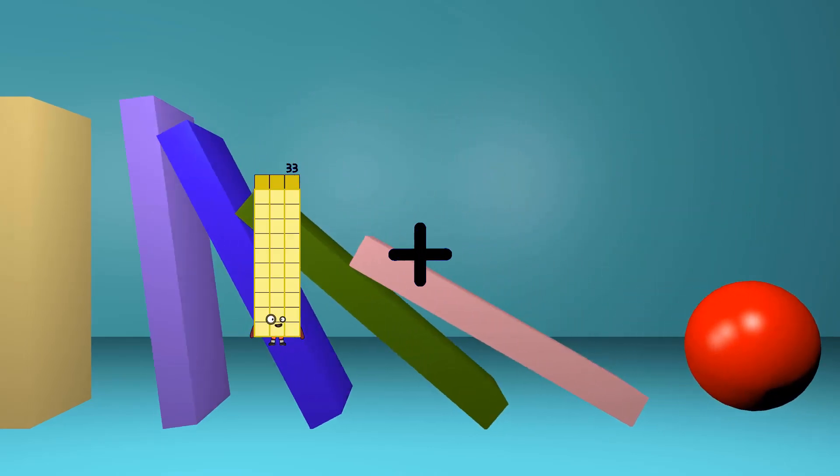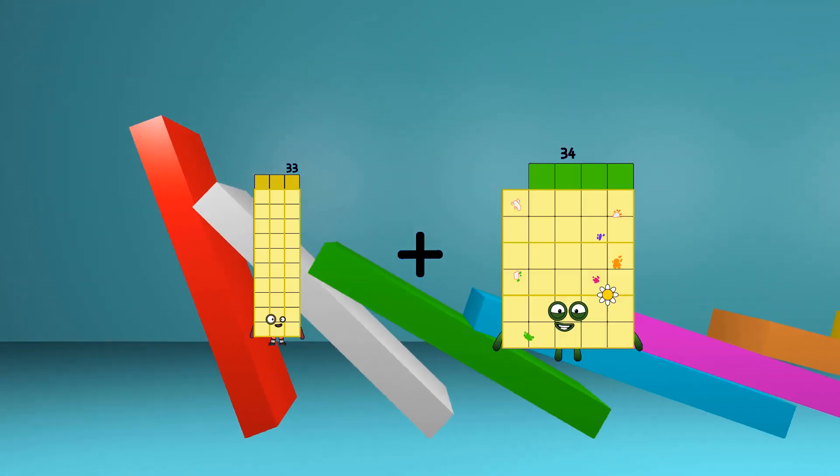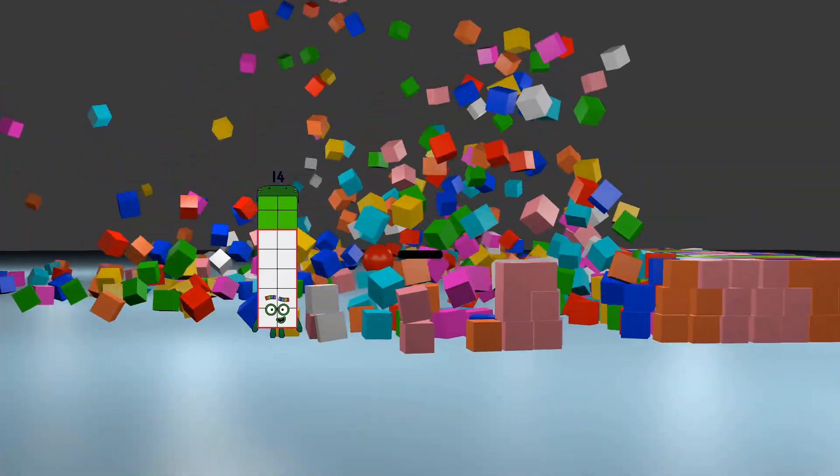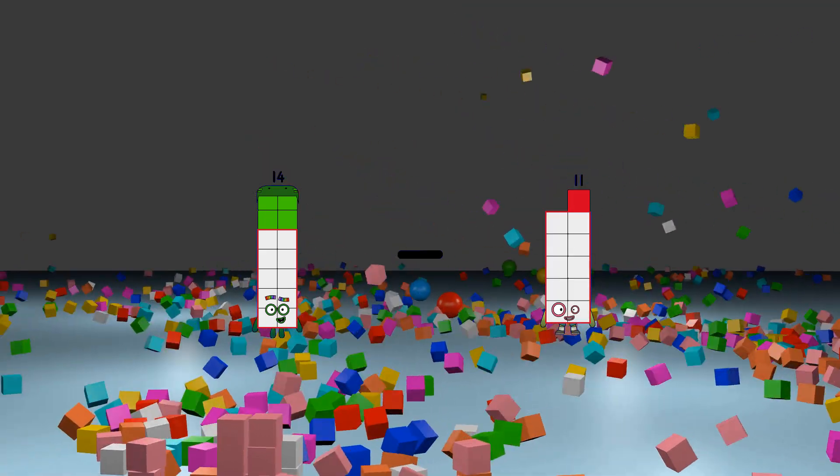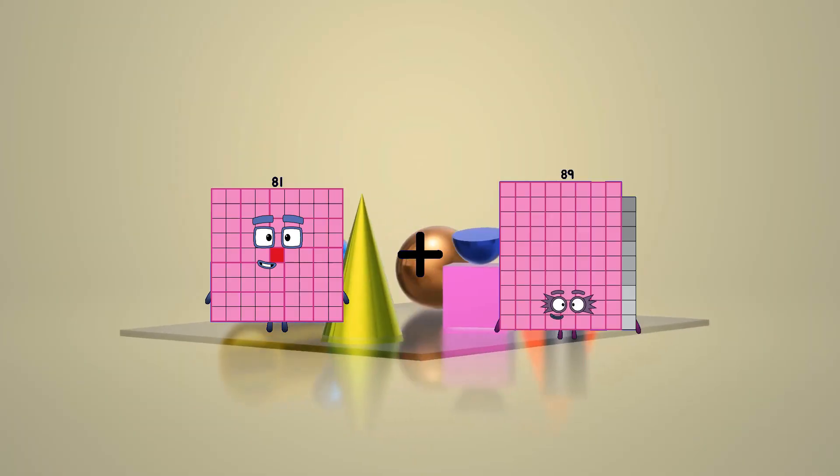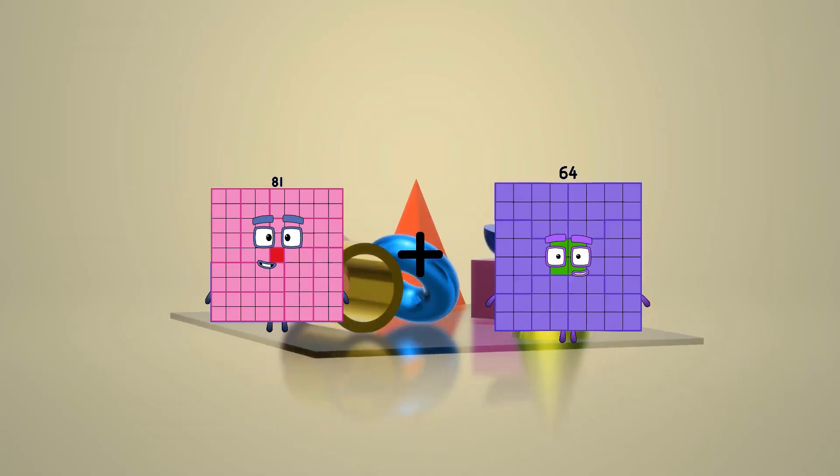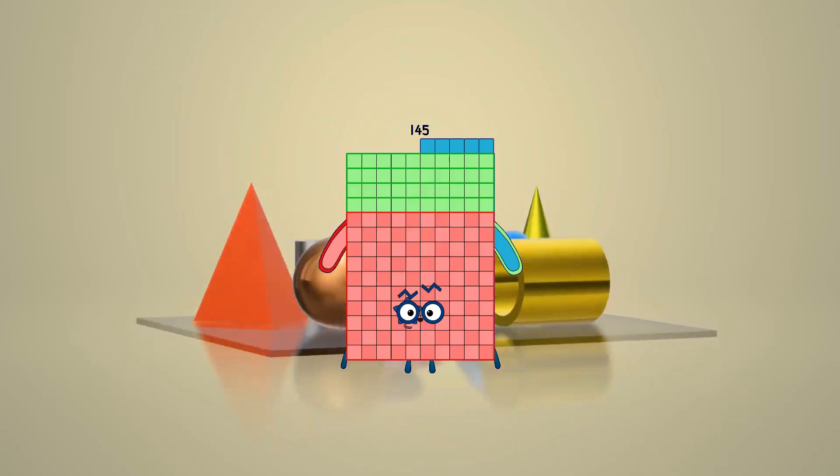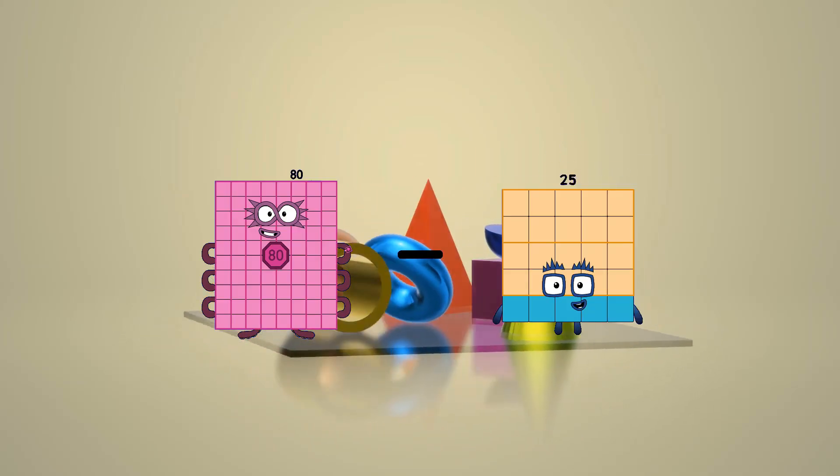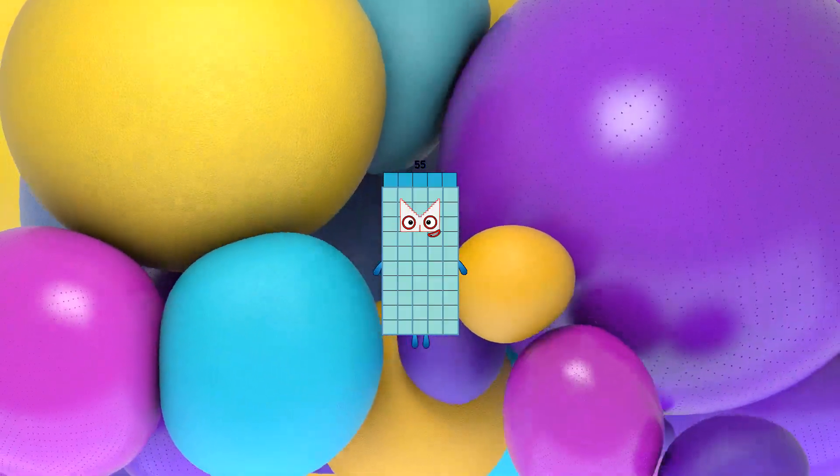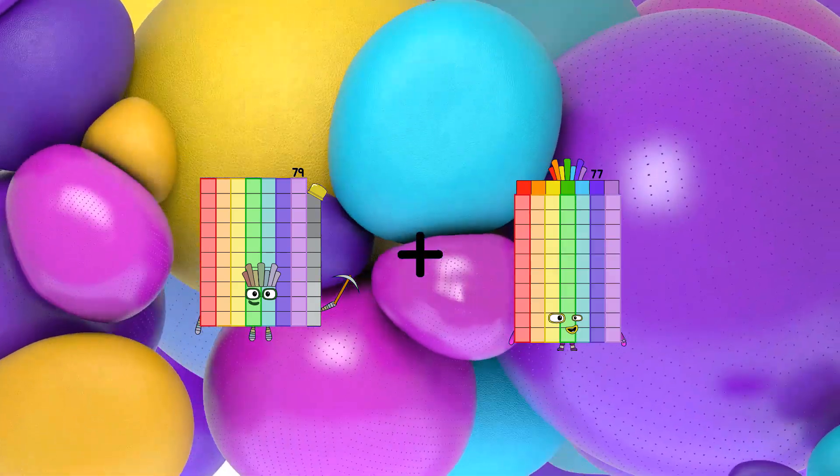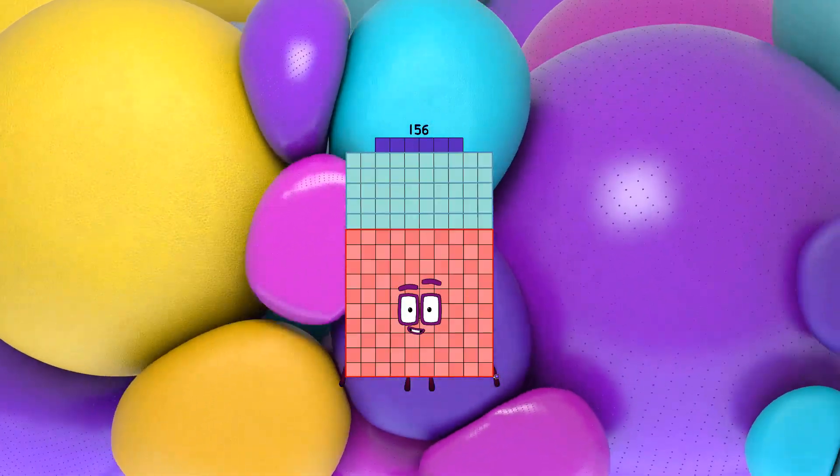33 plus 3 equals 36. 14 minus 11 equals 3. 81 plus 64 equals 145. 80 minus 25 equals 55. 79 plus 77 equals 156.